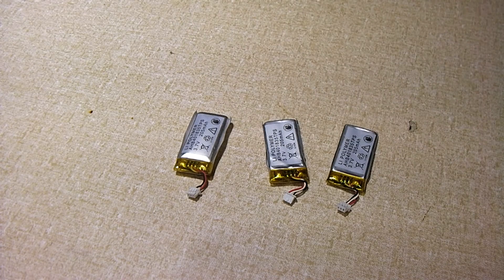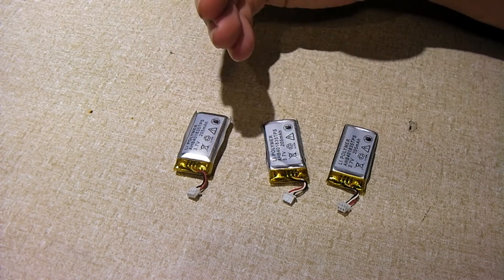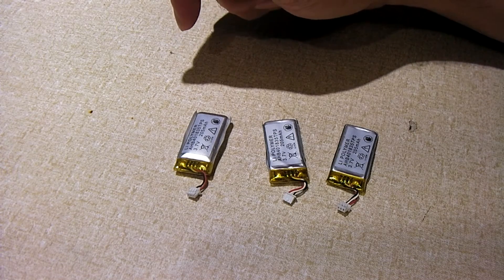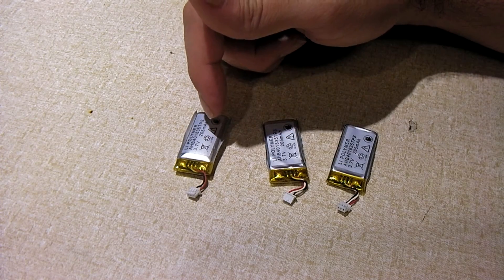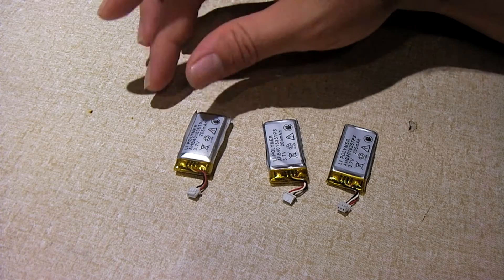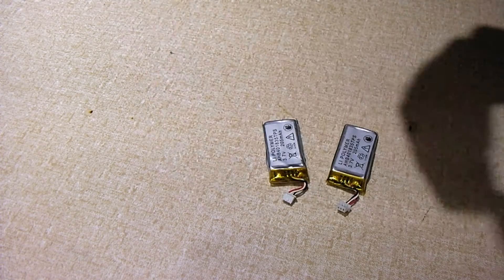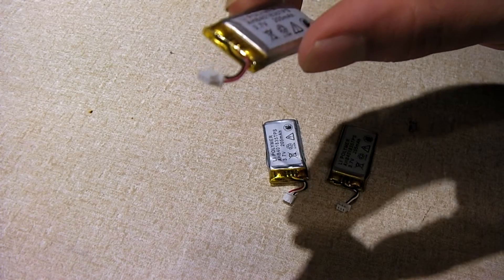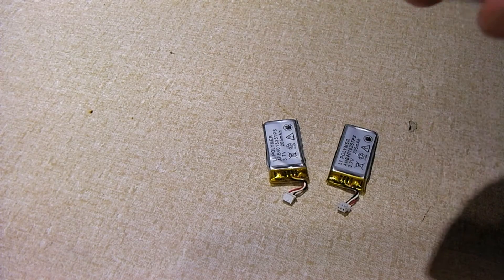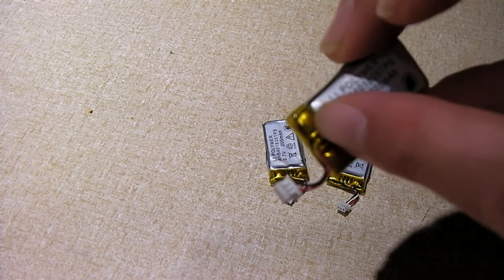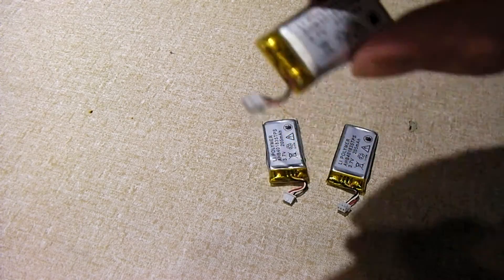Roughly in the span of a month, I mean, these were just sitting on my shelf up here. In the span of a month, this one has swollen up to look like this. Now, these cells do have a protection circuit on them. I do see a little circuit on the front. And right there are the actual battery terminals.